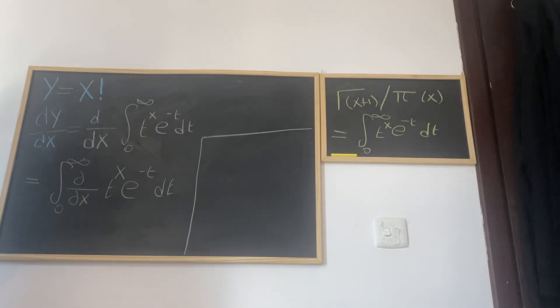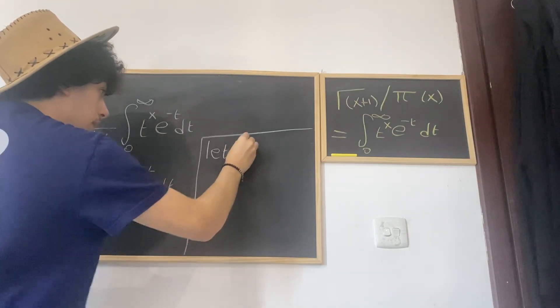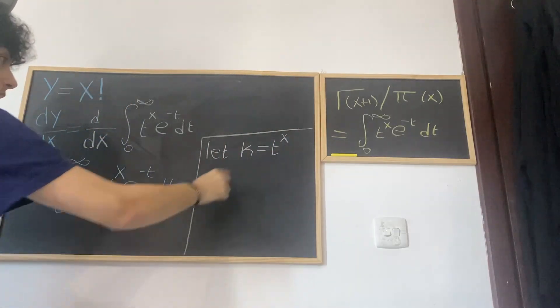So let's let k equal t^x. Let's take the ln of both sides, so ln(k) is equal to x ln(t).